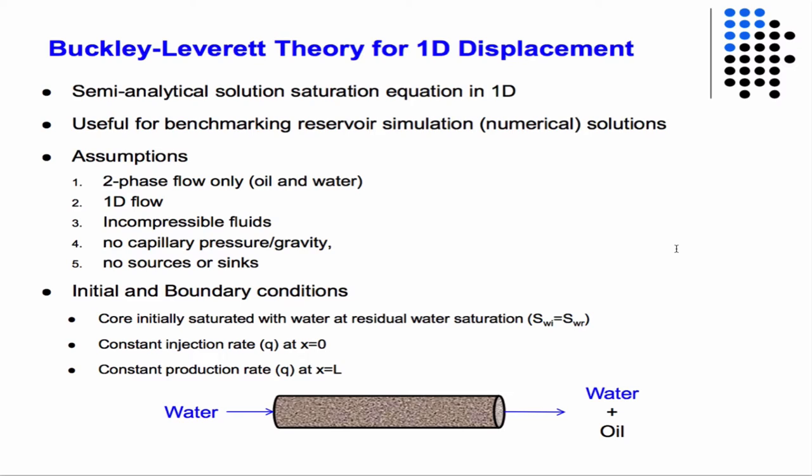In the Buckley-Leverett problem, we only have two phases, oil and water. We assume 1D flow, incompressible fluids and rock, no capillary pressure or gravity, no sources or sinks. The boundary conditions are that the core is initially saturated with water at the residual water saturation. We're going to inject water at a constant rate Q and produce water and oil at a constant rate Q.